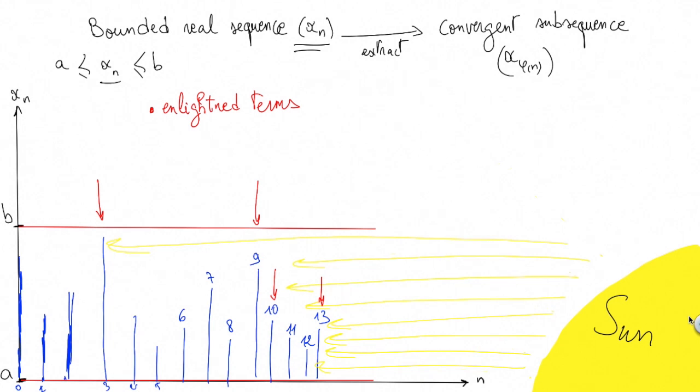At the opposite, terms hidden by x3, x9, and x13 are shaded. They don't receive the sunbeams.